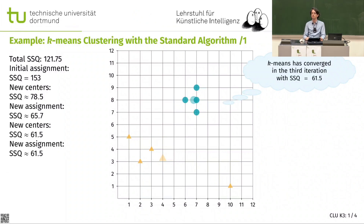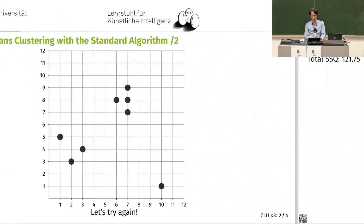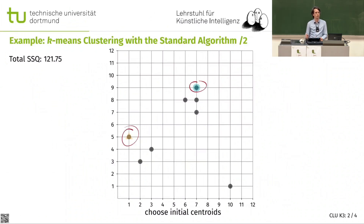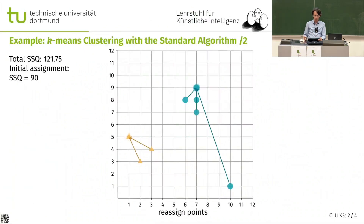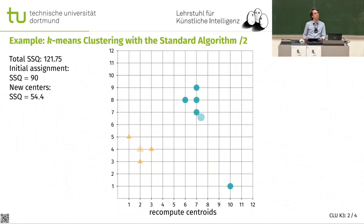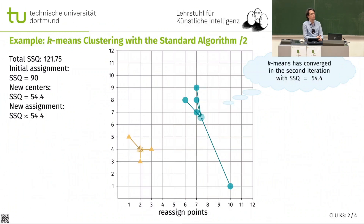Let's restart and do the same thing again. But this time we get to pick these two points as initial centers, and that's probably a better choice. Let's see if we can find a better solution. Every point is assigned to the nearest center. I'm updating my cluster centers, assigning every point to the same center, and it's already converged - same assignment, same centers. And now we actually have a better solution.